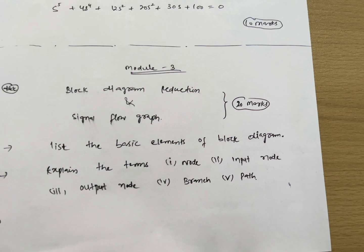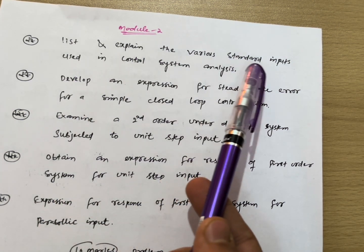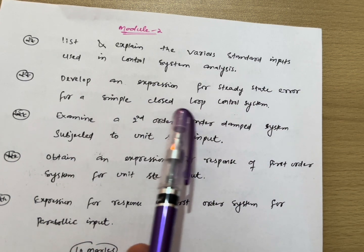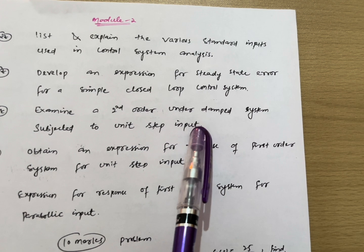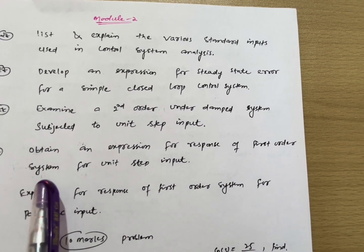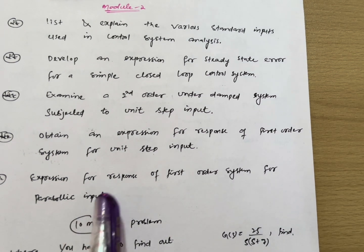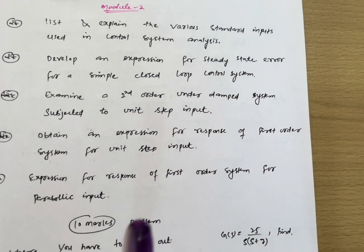Next, Module 2 has some super important questions: list and explain the various standard inputs used in control system analysis; develop an expression for steady-state error for a simple closed loop control system; examine a second-order underdamped system subject to unit step input; obtain an expression for the response of a first-order system for unit step input and for parabolic input. These are theoretical and derivational portions from Module 2, and you can also grab more than 15 marks from this module.